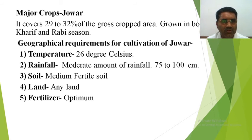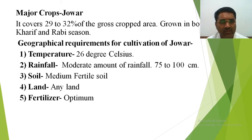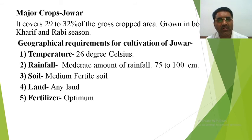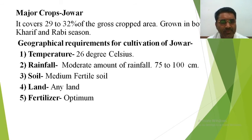The next major crop is jowar, which covers 29 to 32 percent of the total crop area and is grown in both kharif and rabi seasons, including winter. The geographical requirements for jowar cultivation are: a temperature of 26 degrees Celsius, a moderate rainfall of 75 to 100 centimeters, and medium fertile soil.